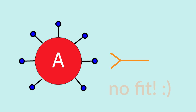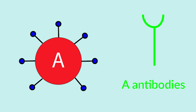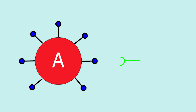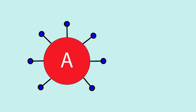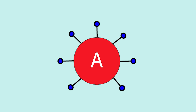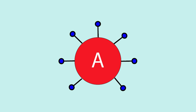But if for some reason there were A antibodies with the A antigens, then they would bind with a high affinity and kill the RBCs — they fit. We don't want that to happen. We want our RBCs to live long and healthy lives. So it is important that we only have B antibodies when we have A antigens present.